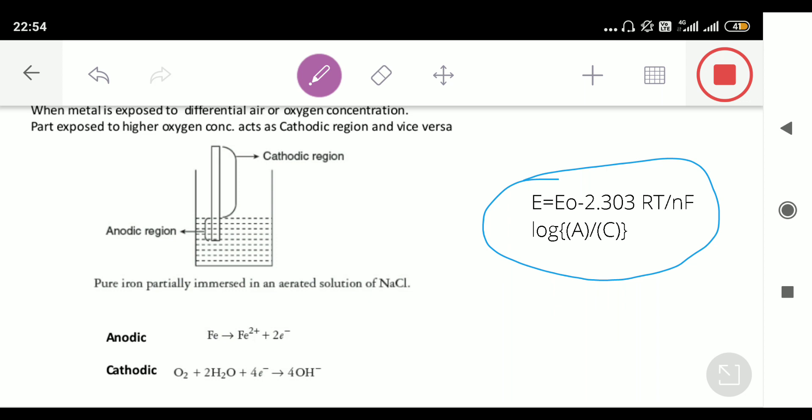In that case, A upon C is less than 1, so log less than 1 equals negative. Negative into negative is going to be positive, so EMF is going to be positive only when cathodic part has more concentration than the anodic part. The cell is feasible only when cathodic part has more concentration than the anodic part when E0 is zero.